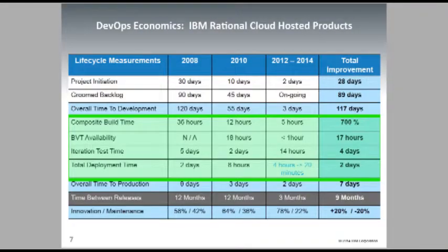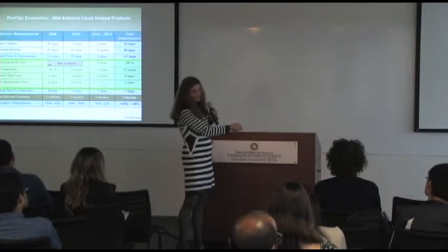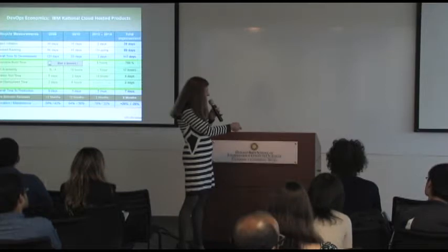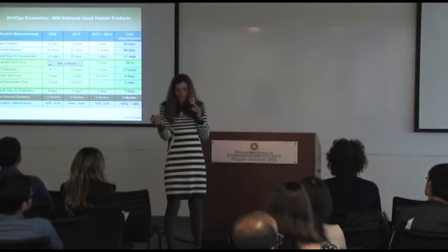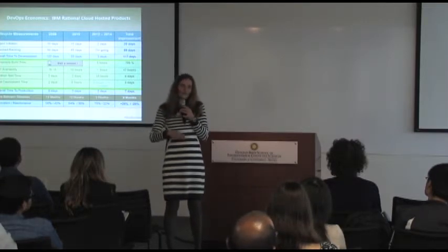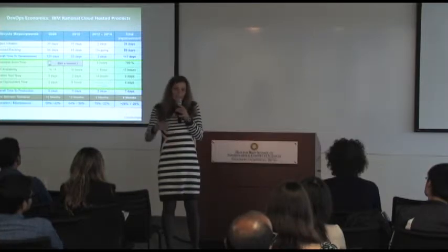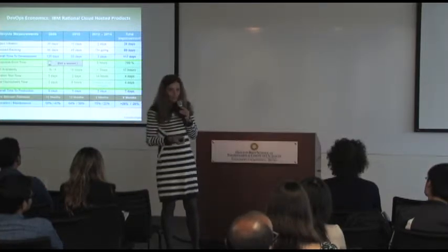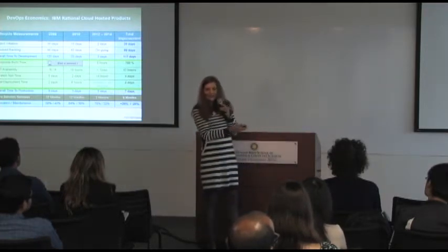You can see the kind of improvements they're making — pretty dramatic. Back in 2008, beta verification test availability wasn't even being done. Code was just thrown over the wall to fulfillment, stamps on disks, and out to market — very costly when you got errors. That's why you do DevOps.